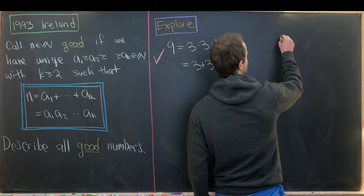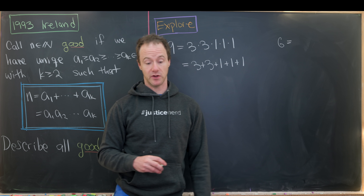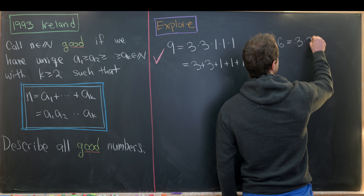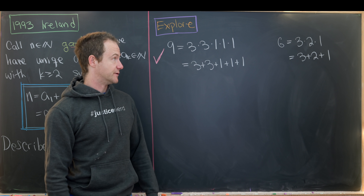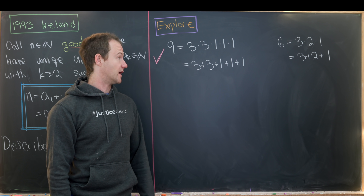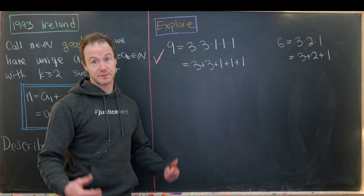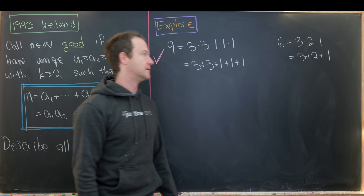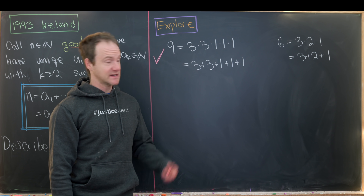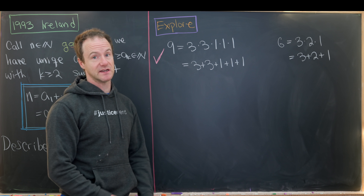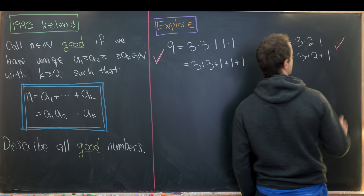Now let's look at 6. Six is a classic example: 3 × 2 × 1 = 3 + 2 + 1 = 6. The only other way to write 6 as a product would be 6 × 1, combining the 3 and 2 — but then 6 + 1 is larger than 6. So that sketches why 6 is also a good number.